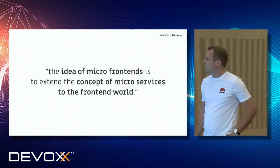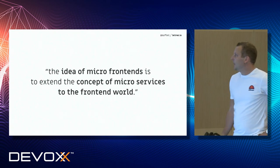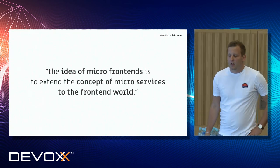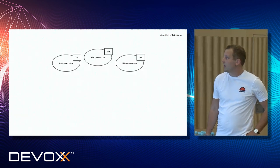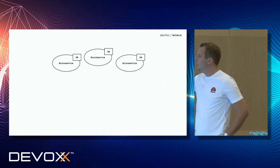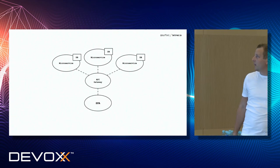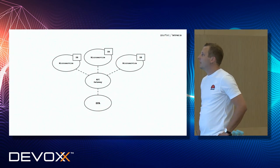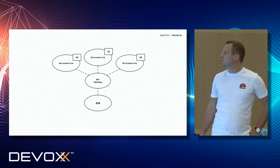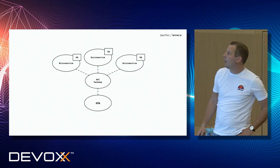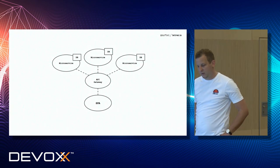Let's start with the classical blueprint architecture as I see it in most projects I'm involved in. This blueprint architecture usually consists of some kind of microservices, then some kind of single-page application — Angular, React, or whatever — and in between, an API gateway. This is roughly how it's done in 90% of the projects I work with.